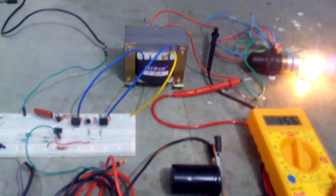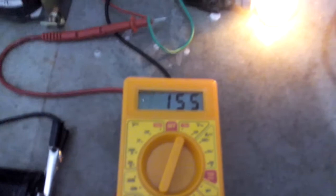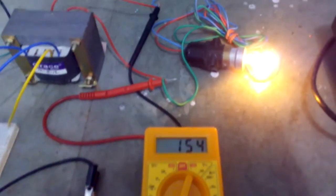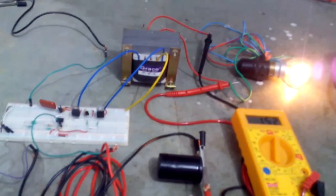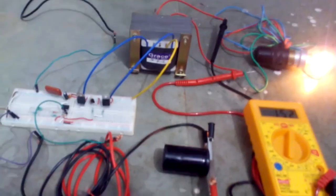And here our bulb is glowing and our output voltage is 155 volts. So it was all about a square wave inverter. To know more about this please refer our blog.